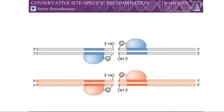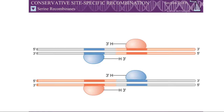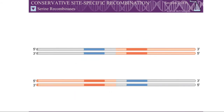The covalent protein-DNA intermediate conserves the energy of the cleaved phosphodiester bond. As a result, the DNA strands can be rejoined simply by reversing the cleavage reaction. Site-specific recombination is called conservative because every DNA bond that is broken during the cleavage reaction is resealed by the recombinase without any input of external energy.